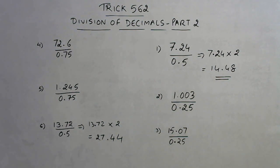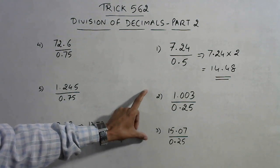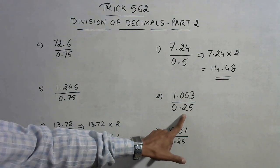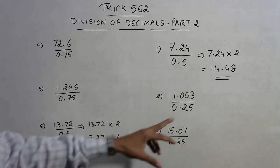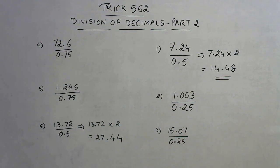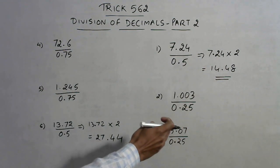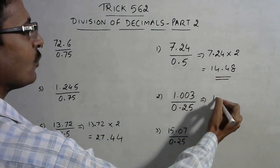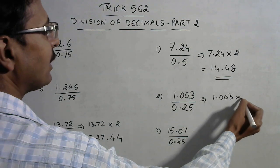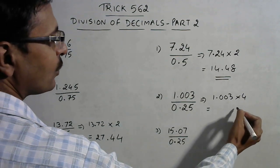So this is division by 0.5. Now see two questions of 0.25. Whenever we have to divide by 0.25 you need to know that 0.25 is nothing but a quarter, that is 1 upon 4. And whenever 1 upon 4 comes in the denominator you have to multiply the numerator by 4. So in this question we will be multiplying by 4. So 1.003 into 4 will give you the answer which will come out to be 4, 3, 12, 0 and 4.